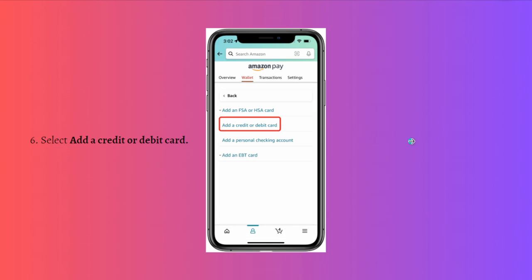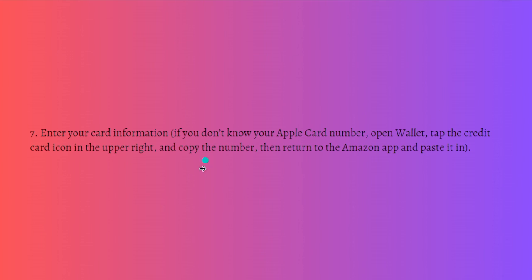Next, select the add a credit or debit card section and then enter your card information. If you don't know your Apple Card number, you can open the Wallet app and tap the credit card section in the upper right, then copy the number, return to the Amazon app, and paste it in.